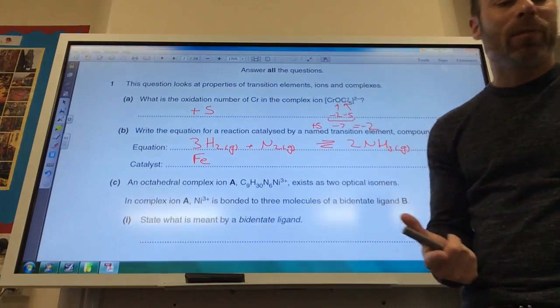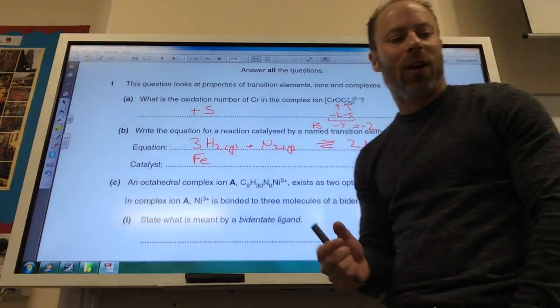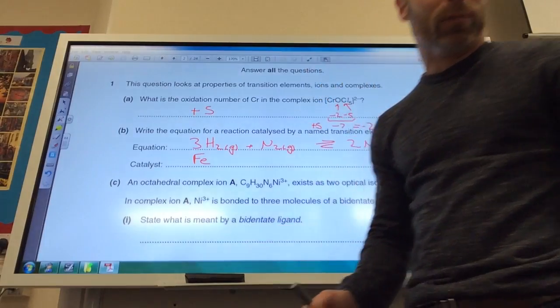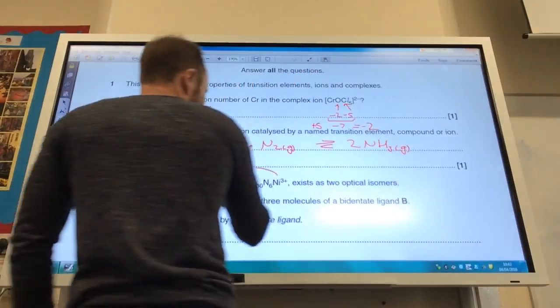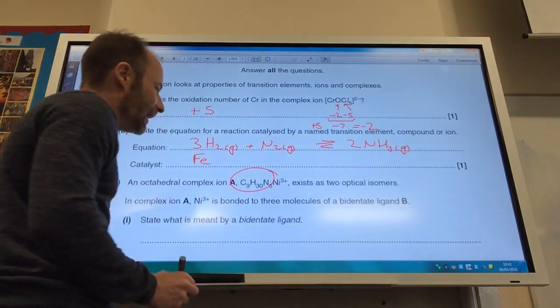A bidentate ligand donates two pairs of electrons to a metal ion, forming two coordinate bonds. What is the molecular formula of this bidentate ligand?